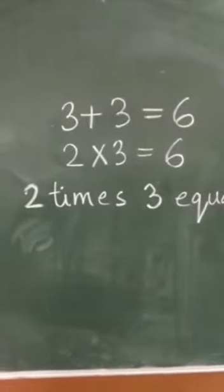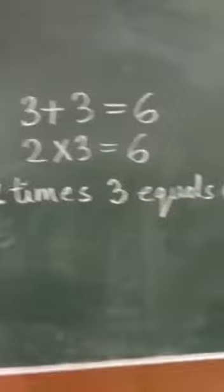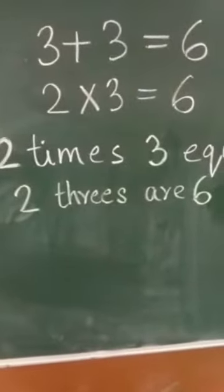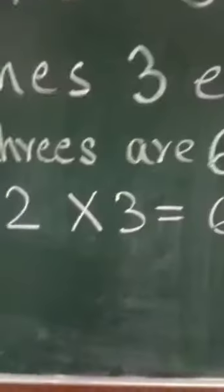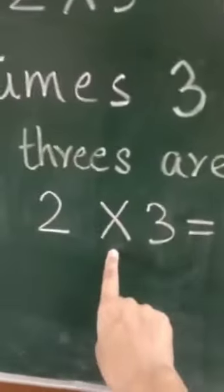We can say that 2 times 3 equals 6. The same thing we can say as two 3's are 6. Here this cross sign means to multiply.